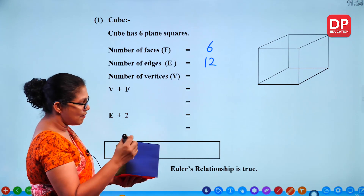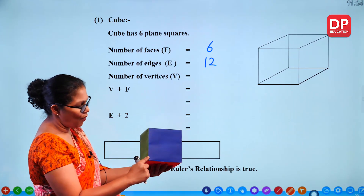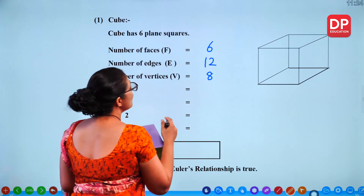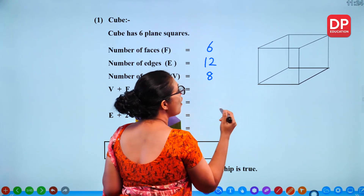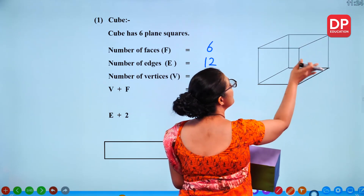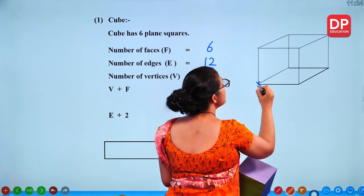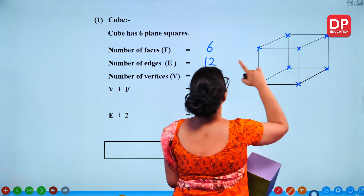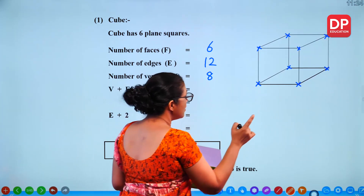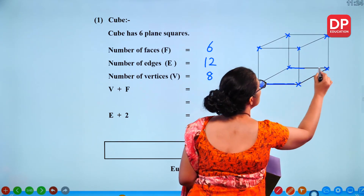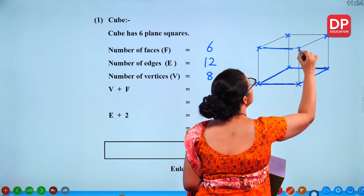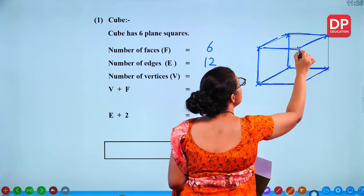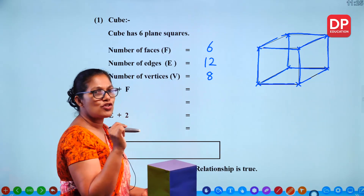Number of vertices — vertices are these corner points. Counting: 4 on one side and 4 on the other side, so 4 plus 4 equals 8 vertices. Looking at this diagram, you can figure out: 6 faces, 8 vertices, and 12 edges.